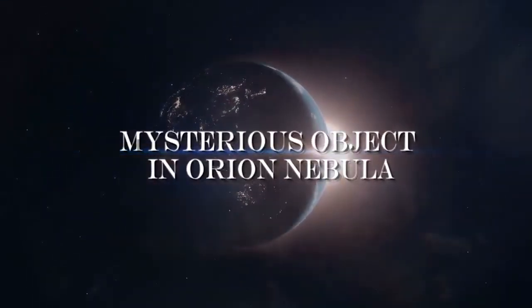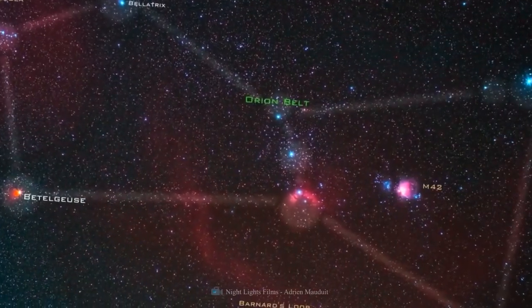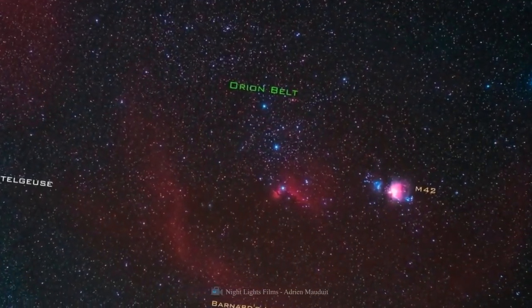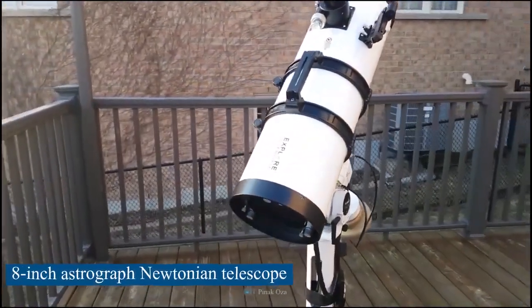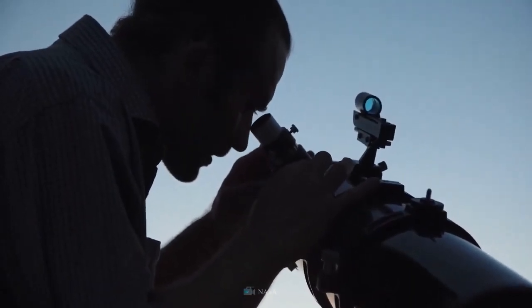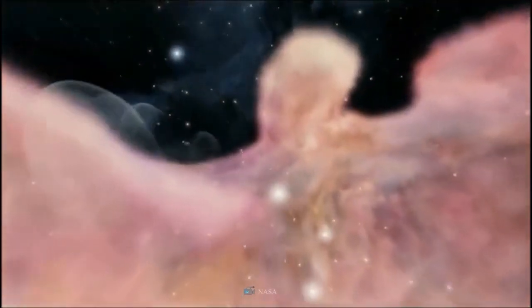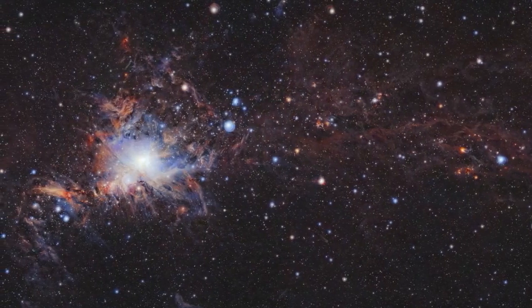Mysterious Object in Orion Nebula - While taking measurements of the M42 Orion Nebula, an astronomer noticed a mysterious cylinder in the images. The astronomer used an 8-inch Astrograph Newtonian telescope to take the picture. He was shocked to observe more of these anomalous things as he took further photographs of the nebula. When analyzed frame by frame, these mysterious things appear to be in transit, progressing from left to right.